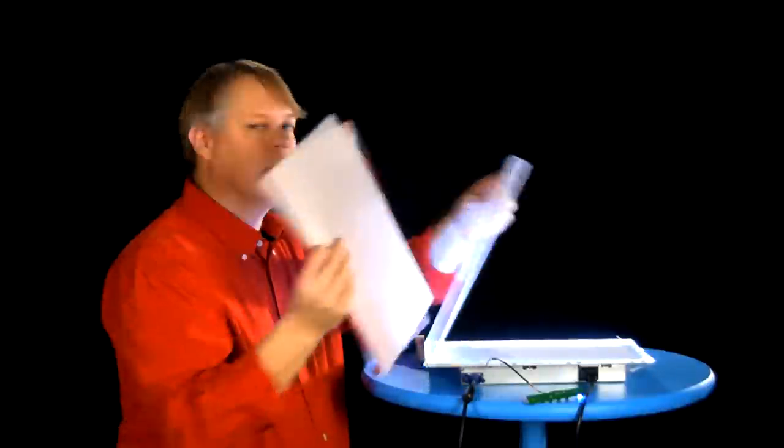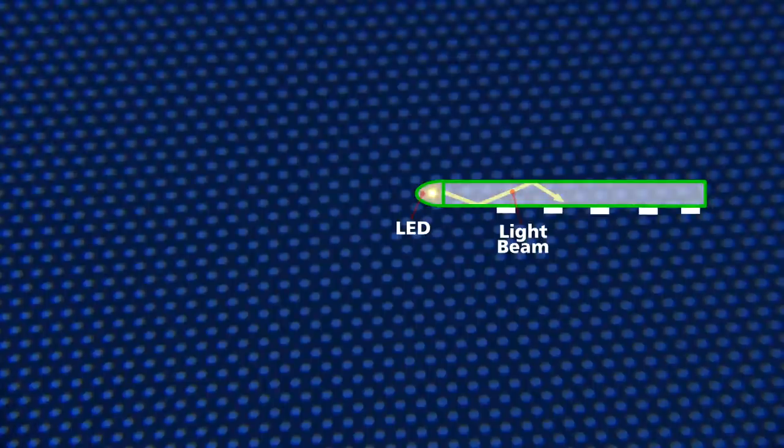The next piece is called a light guide plate. You can see it's covered with dots. When light enters from the bottom edge, it propagates down the plate by total internal reflection, unless it hits one of the dots.